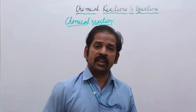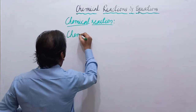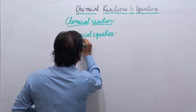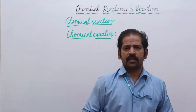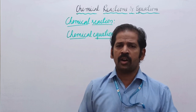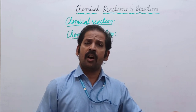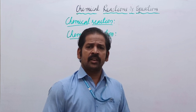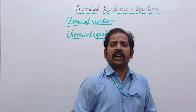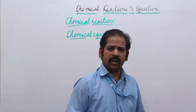Now we are going to discuss the next part: the chemical equation. What is a chemical equation? The symbolic representation of reactants and products is called a chemical equation. The chemicals which are reacting with each other are called reactants, and what we get as something new is the product.